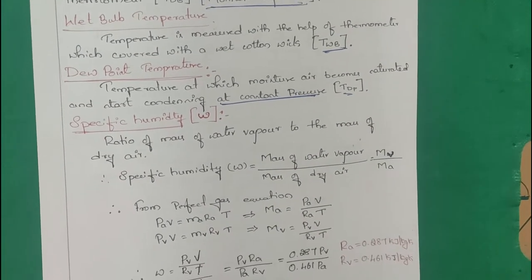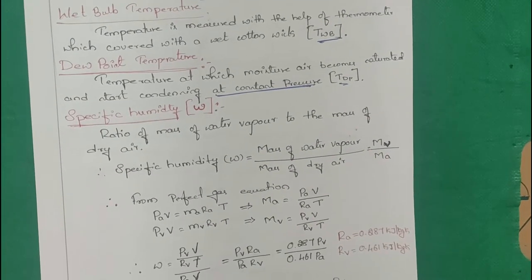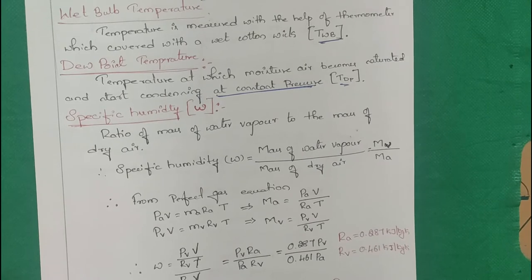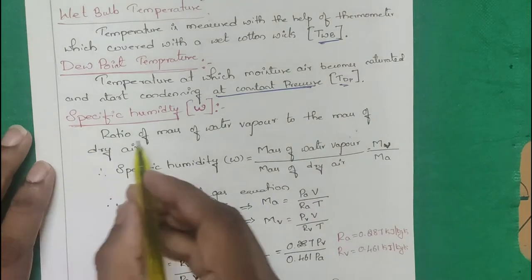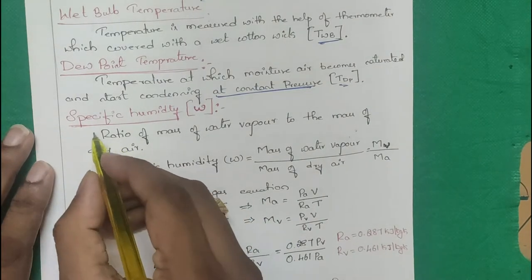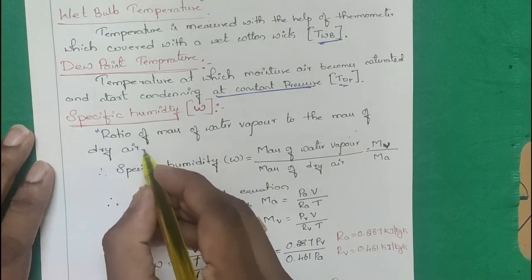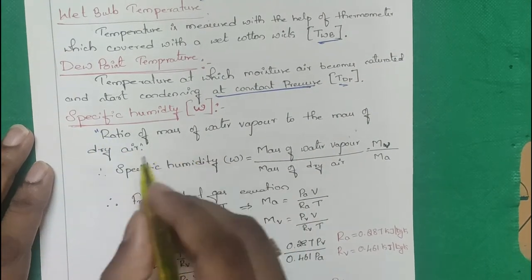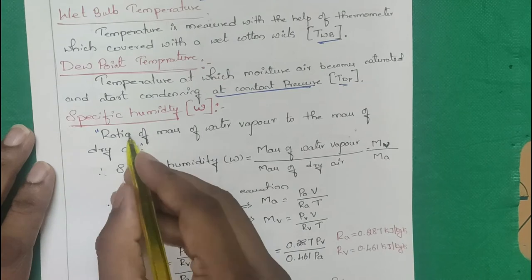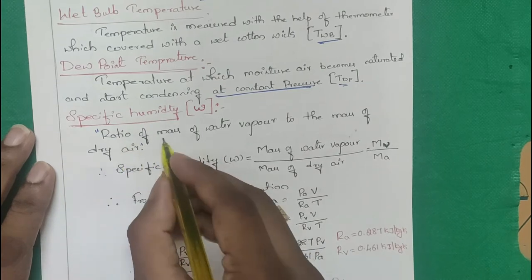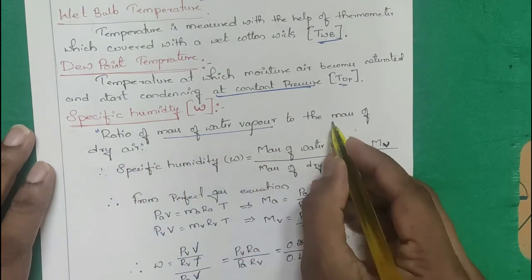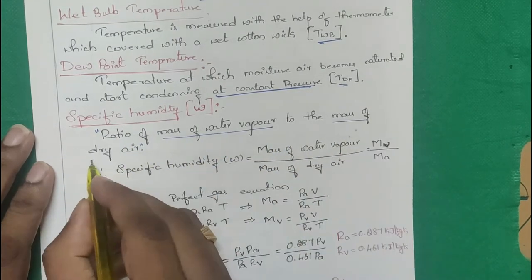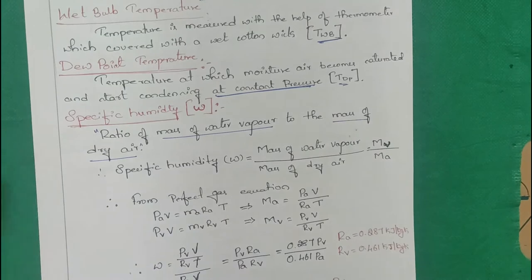Specific humidity is a very simple definition — it is the ratio of mass of water vapor to the mass of dry air.